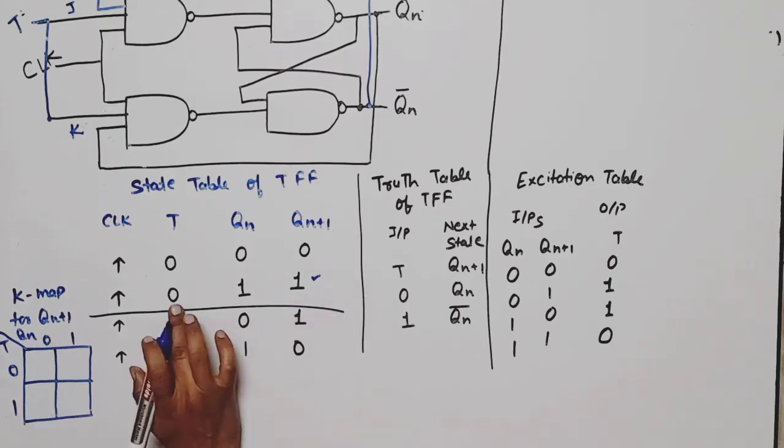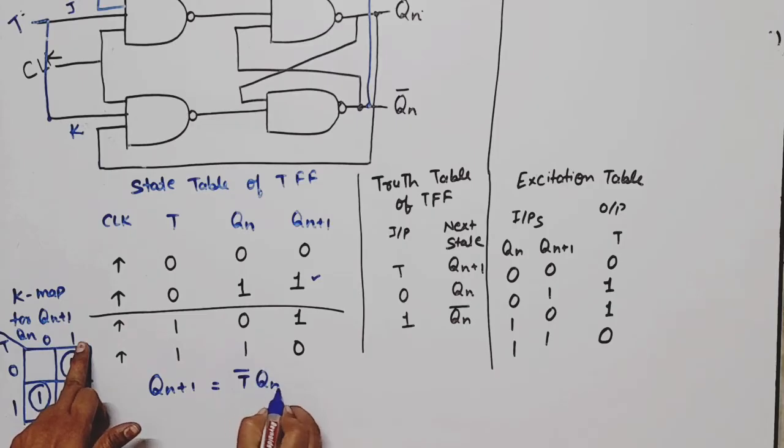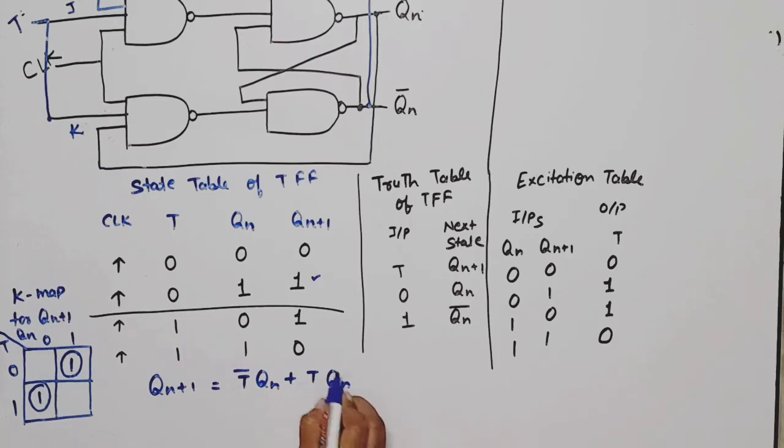Where is QN plus one? In this case, T value is zero, QN value is one, so this term. Here T is one, QN is zero, meaning this one. You can see there is no pair possible, no combination. So QN plus one is equal to, T is equal to zero means T bar, QN is one means QN, plus T is equal to one means T, QN is zero means QN bar. So this is the characteristic equation of T flip-flop.